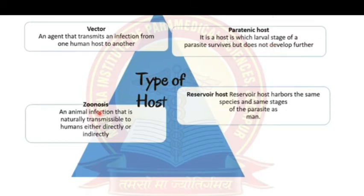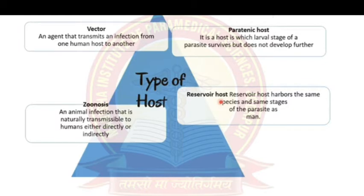Zoonosis refers to infections that humans get from animals. For example, humans can get Taenia saginata or Taenia solium directly from beef or pork, and humans can get Echinococcus granulosus infection from dogs. These are classified as zoonoses.